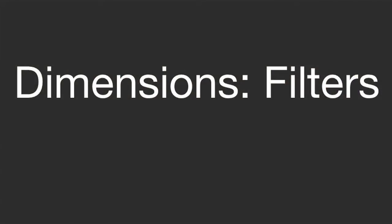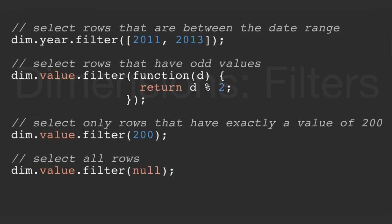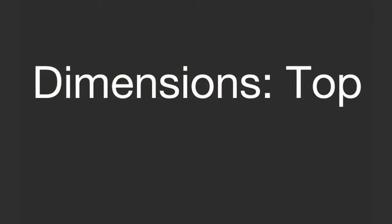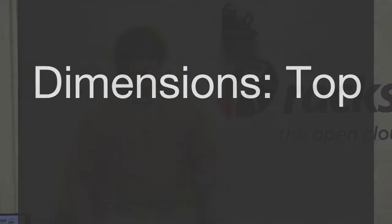Now that we have the rows, we want to figure out how to filter on these rows. With the filter function, you take a dimension and filter by an array which says between 2011 and 2013 — get me all of my data. Or you filtered on this, let's do something about it. Maybe we just want all odd values for some odd reason, or just want only values of 200. There's also the ability to reset the filtering that you have.